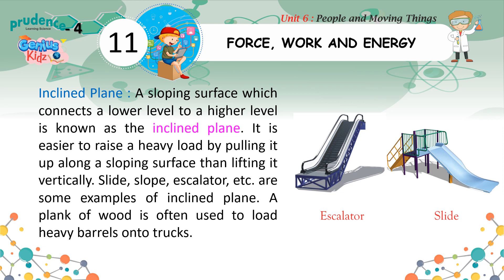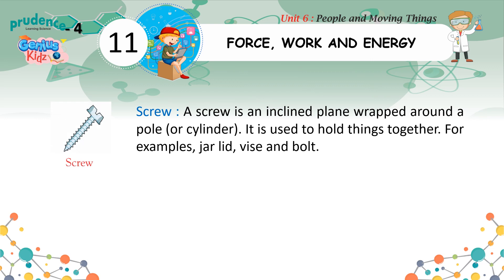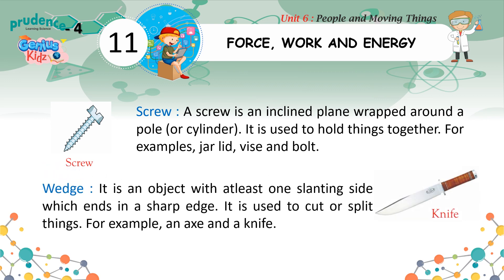Slide, slope, escalator, etc. are some examples of an inclined plane. A plank of wood is often used to load heavy barrels onto trucks. Screw: A screw is an inclined plane wrapped around a pole or cylinder. It is used to hold things together. For example, jar lids, vice and bolt. Wedge: It is an object with at least one slanting side which ends in a sharp edge. It is used to cut or split things. For example, an axe and a knife.